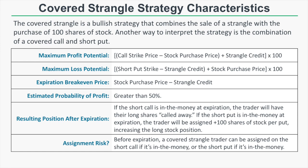The maximum loss potential is the combination of the maximum loss on the shares and the maximum loss on the short put. The short put maximum loss is the short put strike minus the strangle credit, plus the stock purchase price, multiplied by 100. If the stock price goes to zero, you lose the entire stock purchase price and the entire short put strike less the strangle credit.